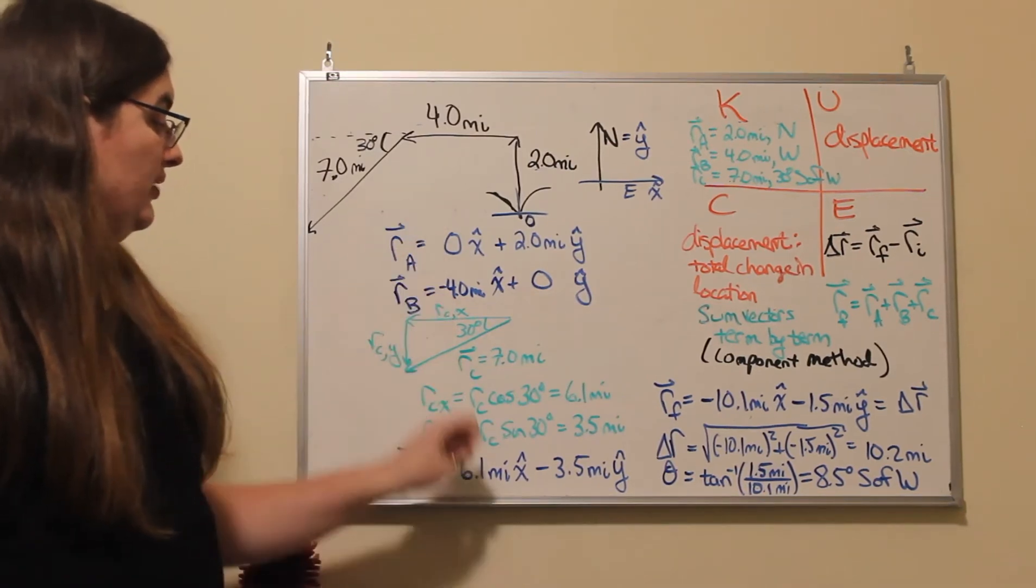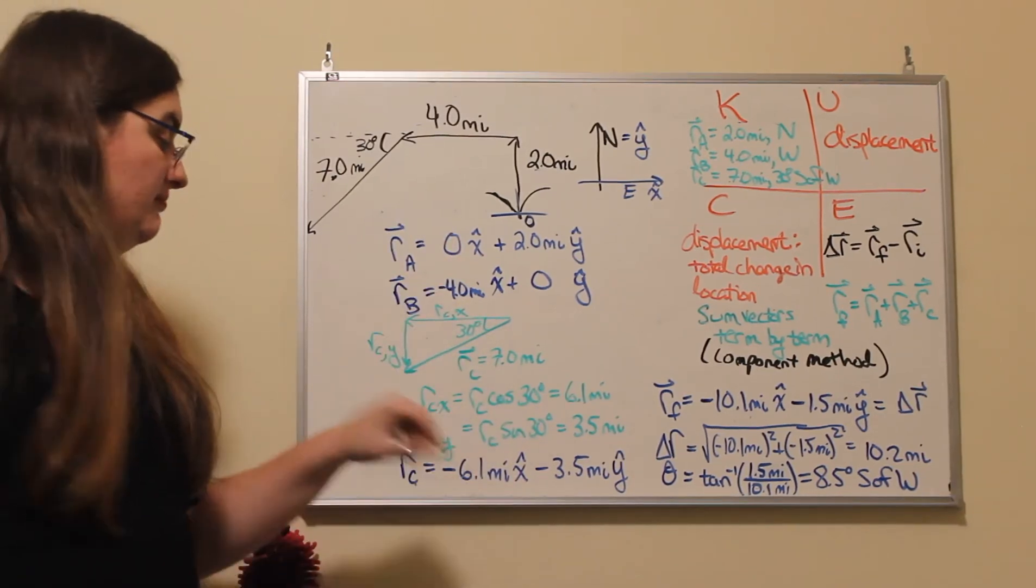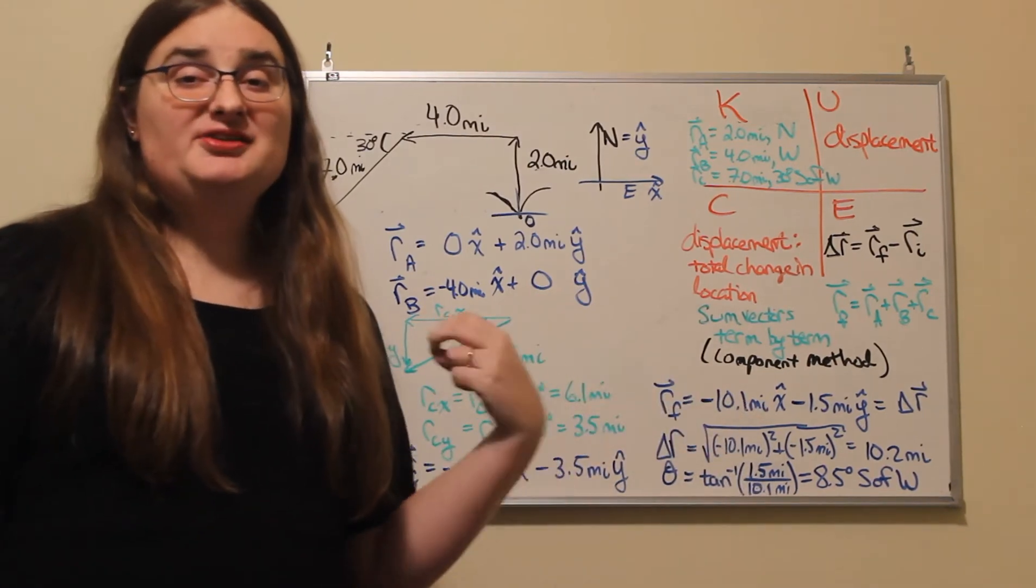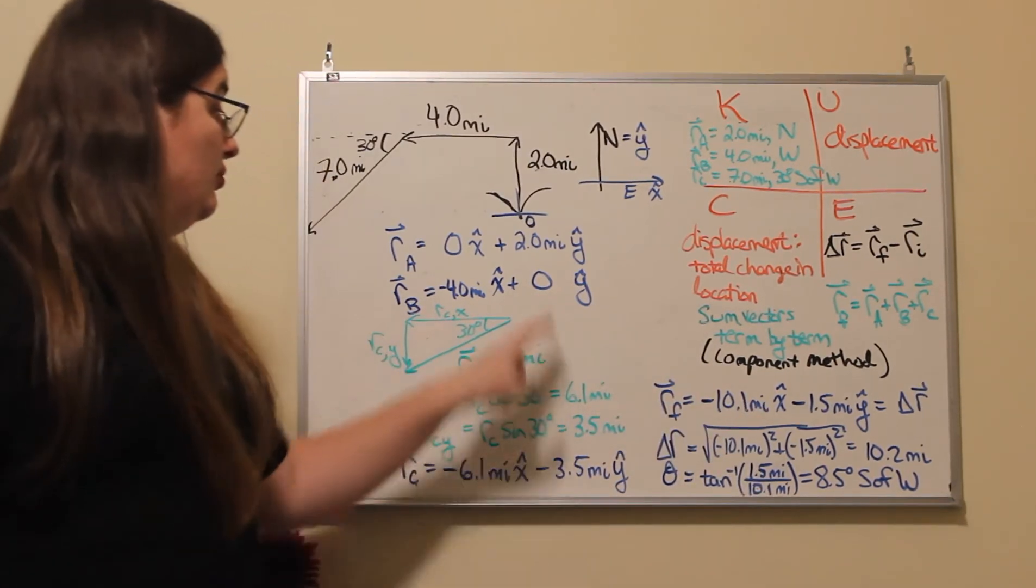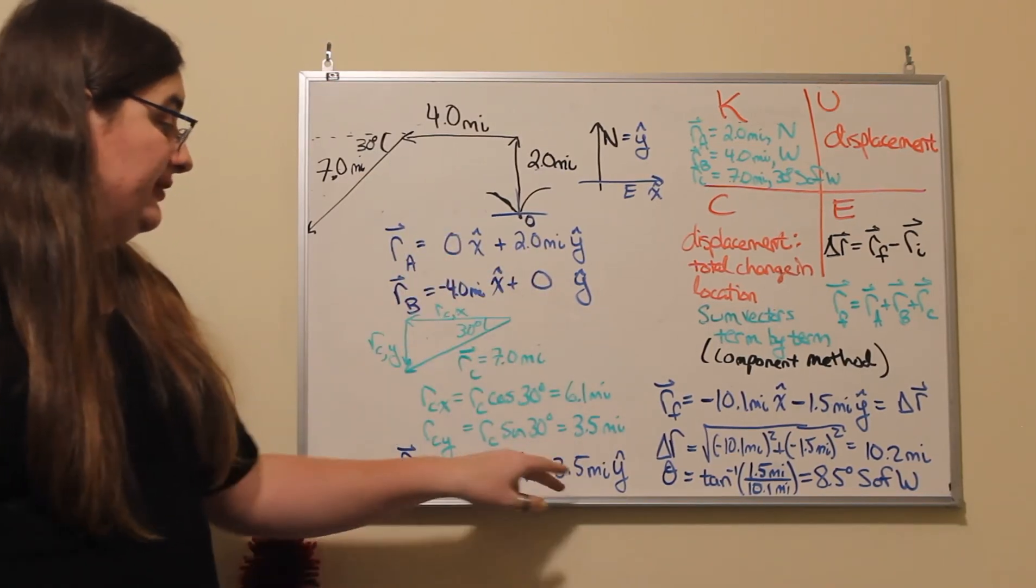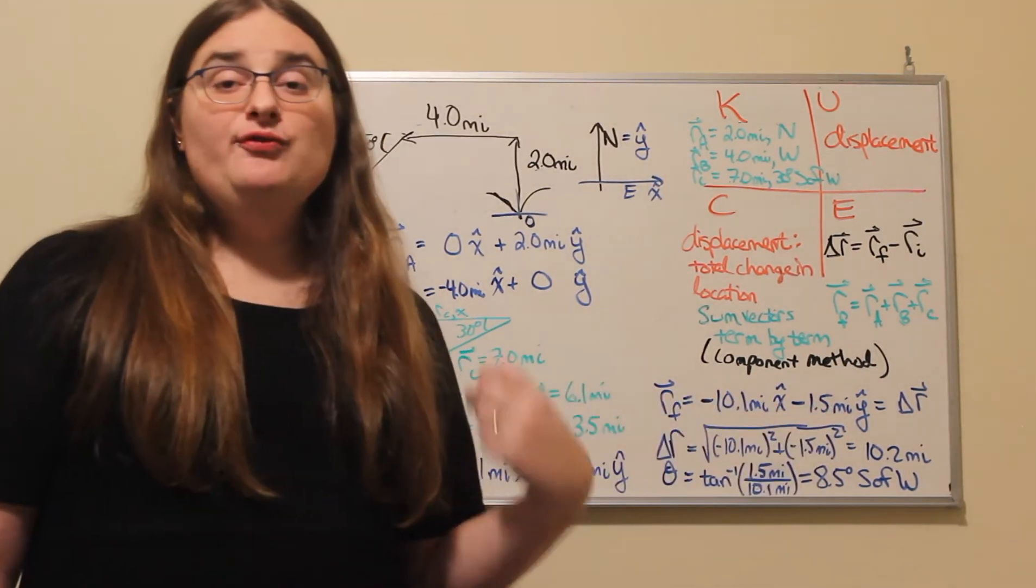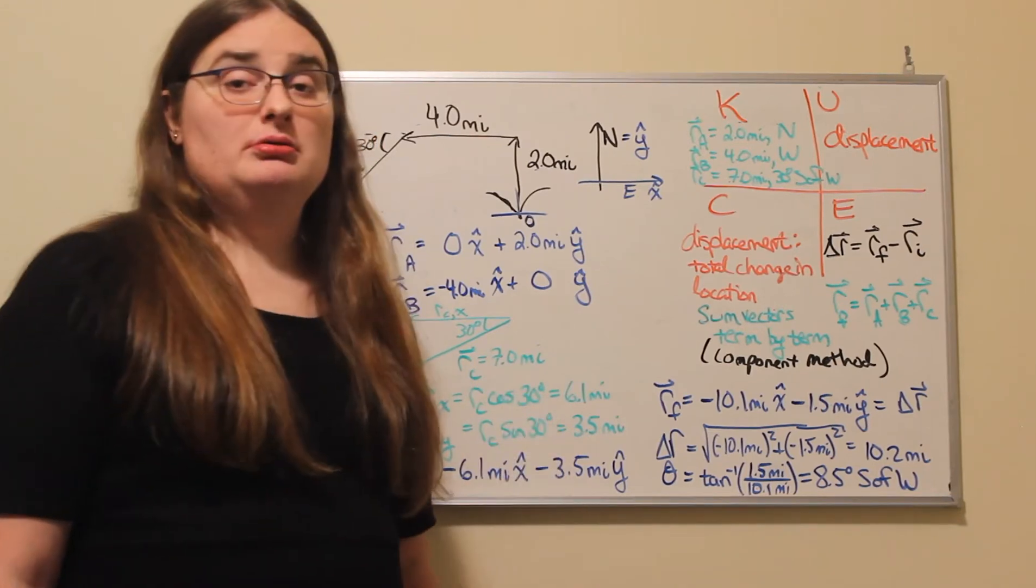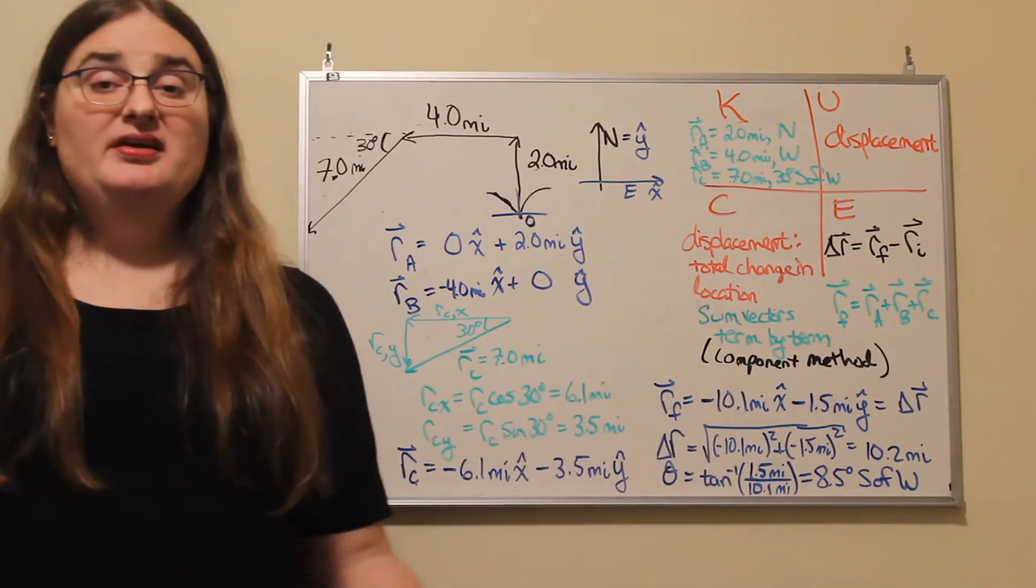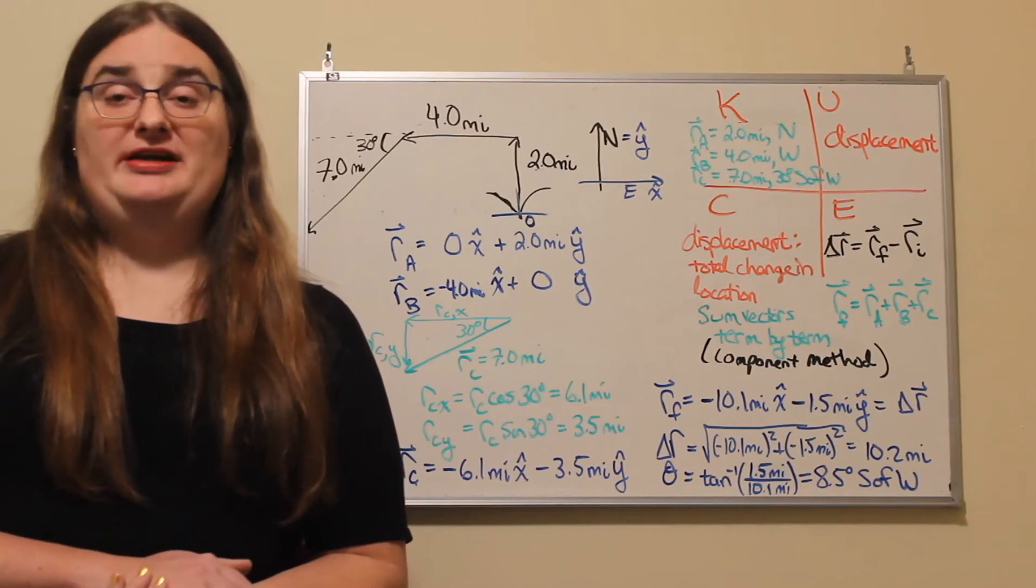So now what happens in x stays in x: zero minus 4 miles minus 6.1 miles means I go negative 10.1 miles in the x direction. What happens in y stays in y: two miles plus zero minus 3.5 miles adds up to negative 1.5 miles in the y direction. And if we need our vector in component form, we're done: negative 10.1 miles in the x direction minus 1.5 miles in the y direction.